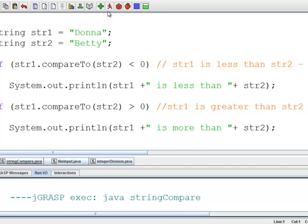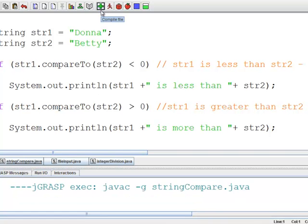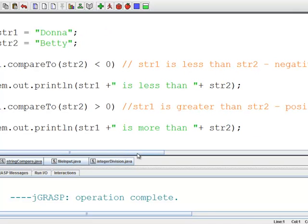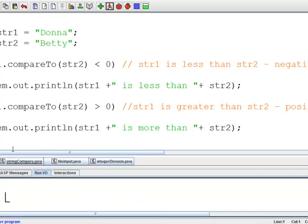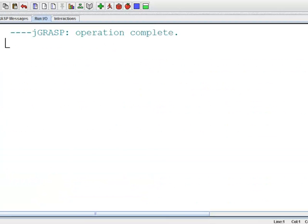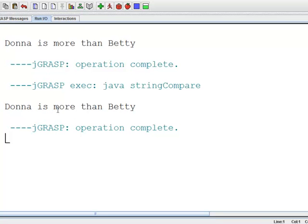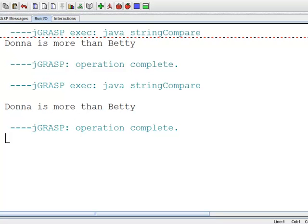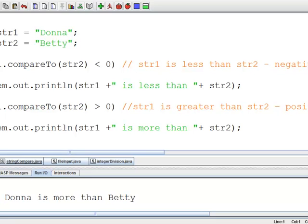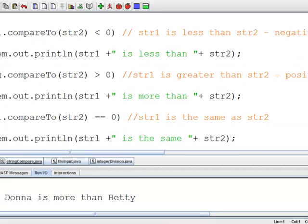Here we have it here, have it compile, have it run. Here we have it printed out: donna is more than betty. As to say, because d is higher than b on the Unicode scale, we printed out our second if statement. String1.compareTo(string2) is more than zero, donna is more than betty.